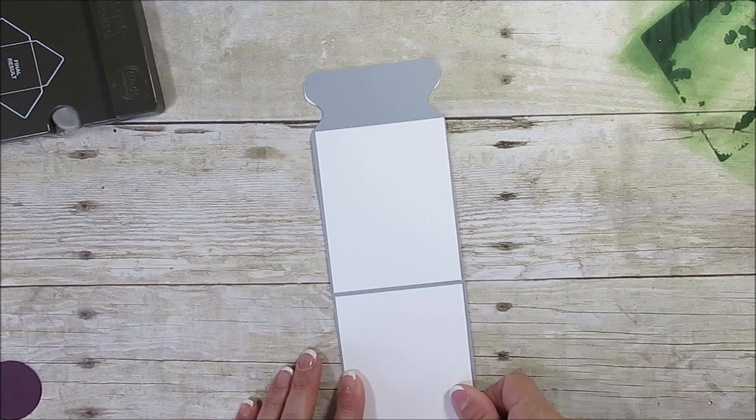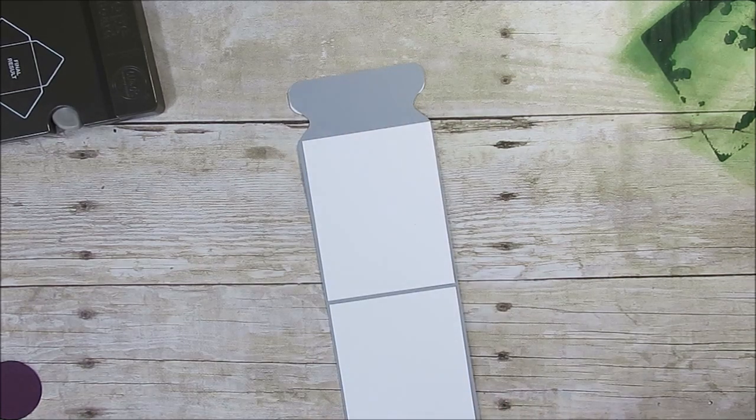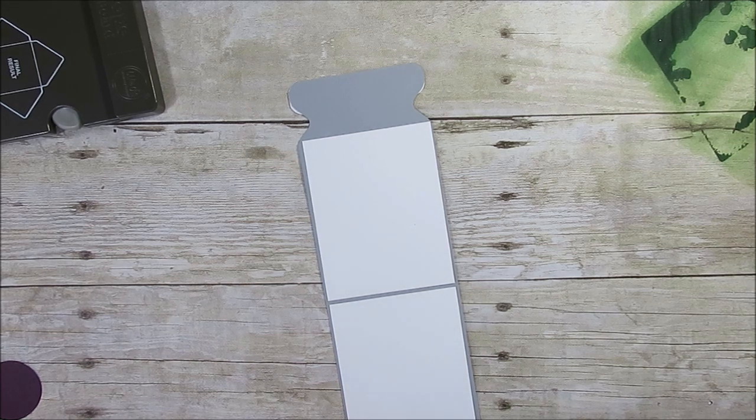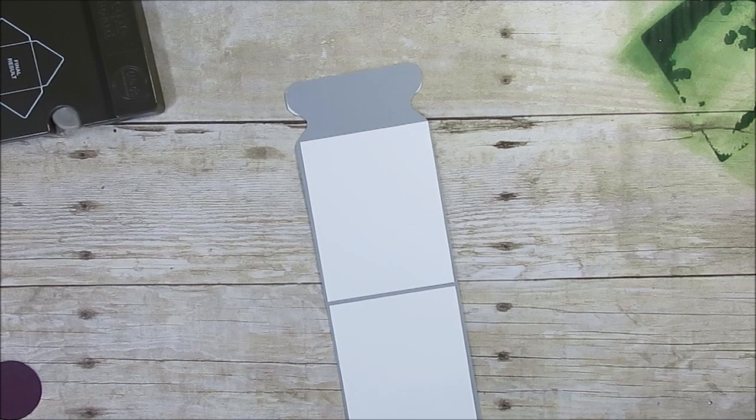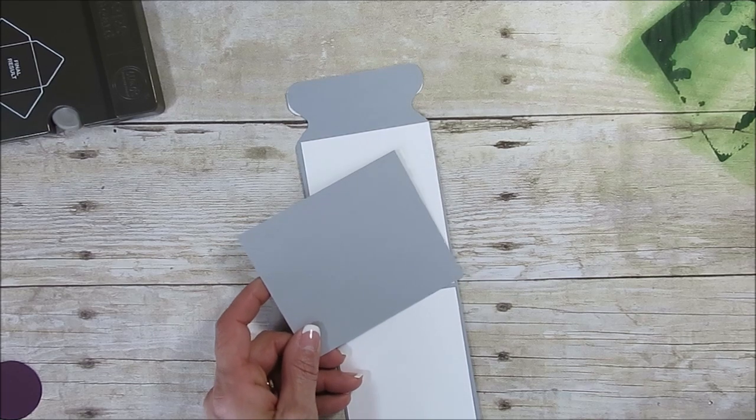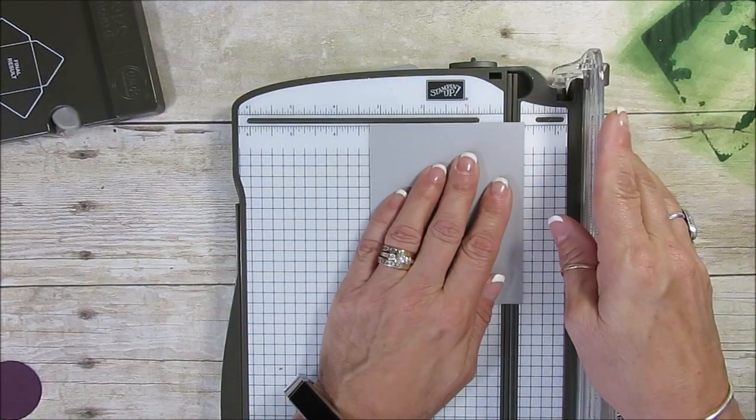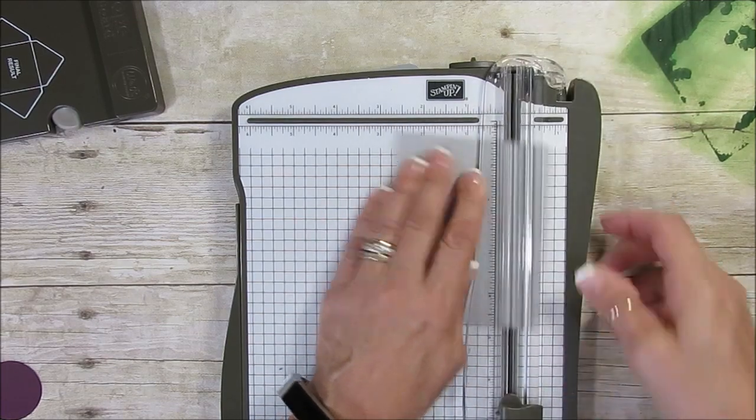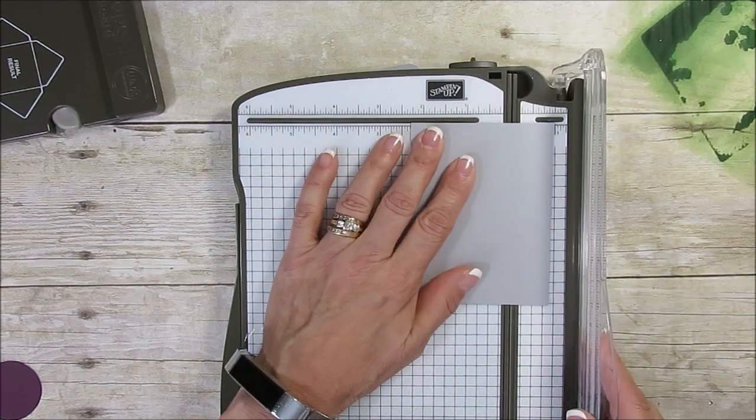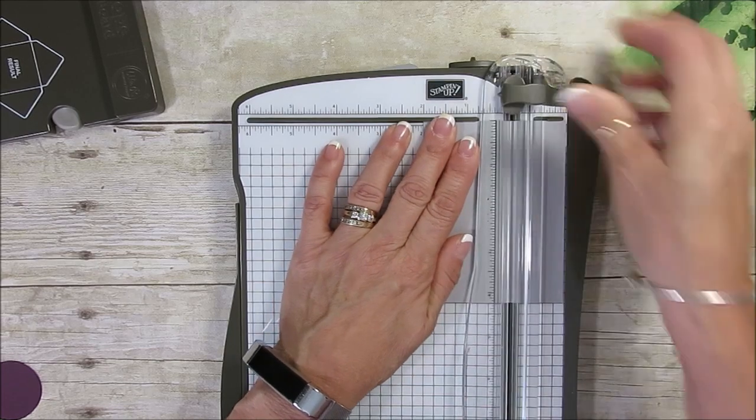Now let's say you want a gift card but you want the long skinny one that way. What you can do is take a piece of cardstock. I would take the Smoky Slate. Let me reach for another piece here. And I would do 3 1/4 because that's the width of this. And then I would do 1 1/4.